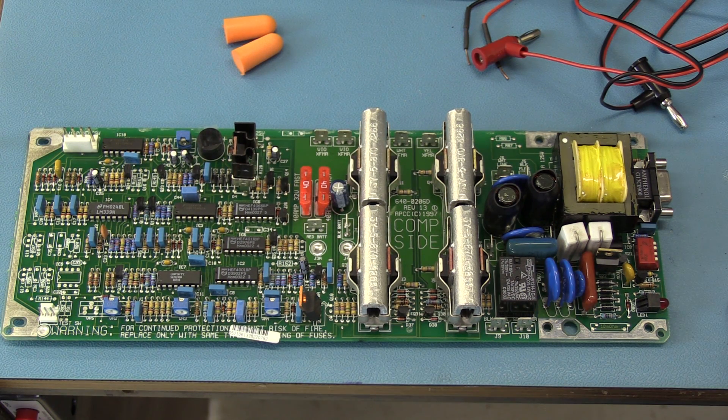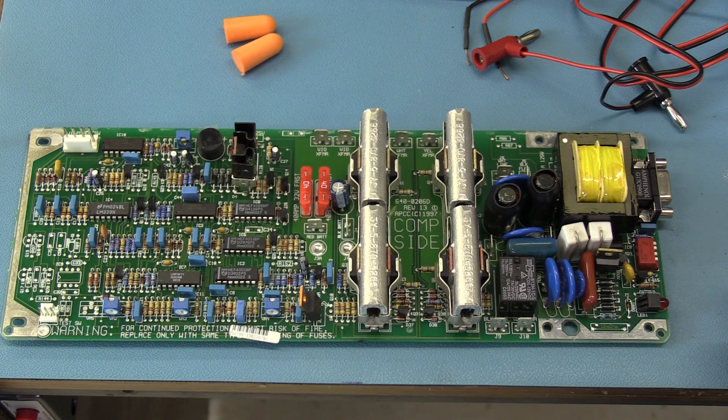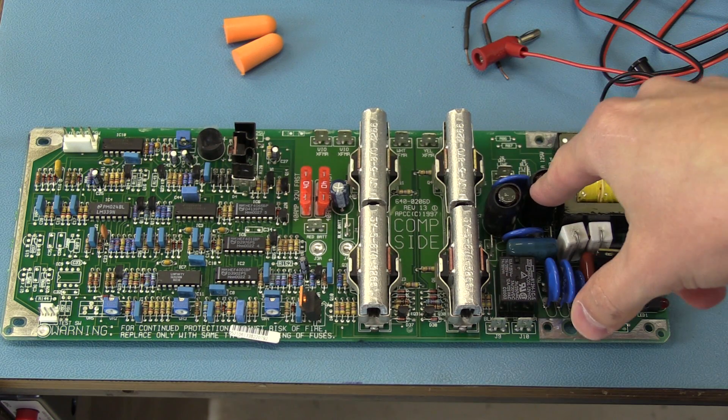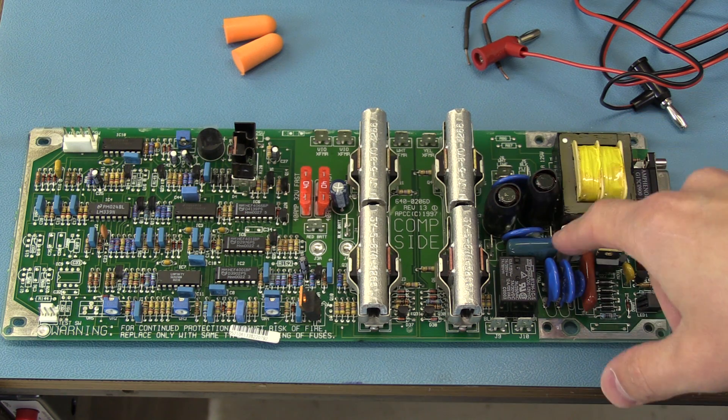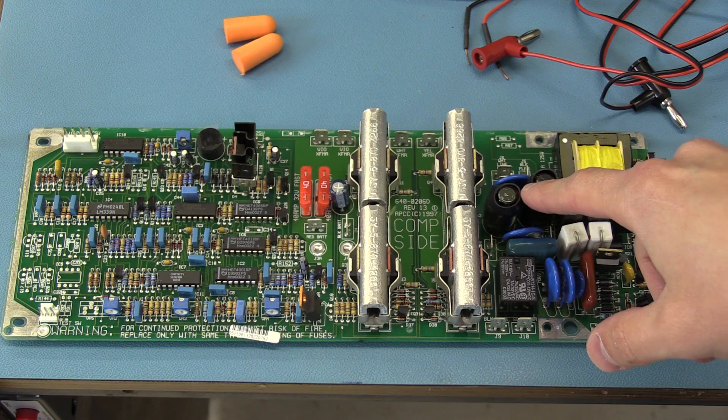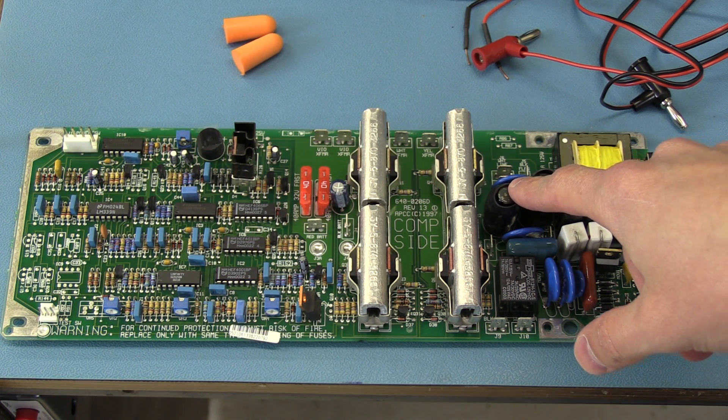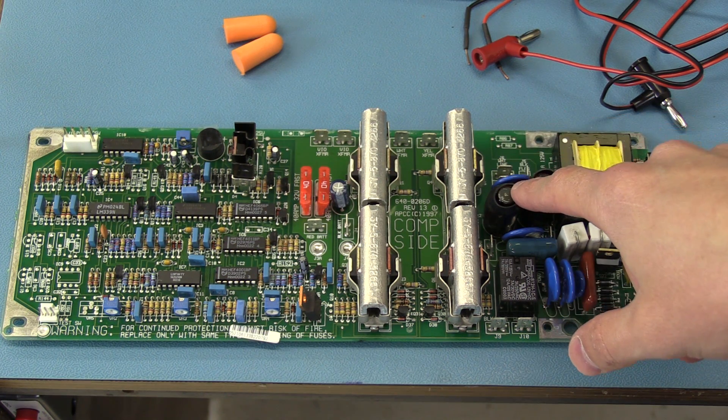This is delightfully old school, all through-hole. So the AC power passes through here. It looks like some surge suppression and filtering, basic stuff there.